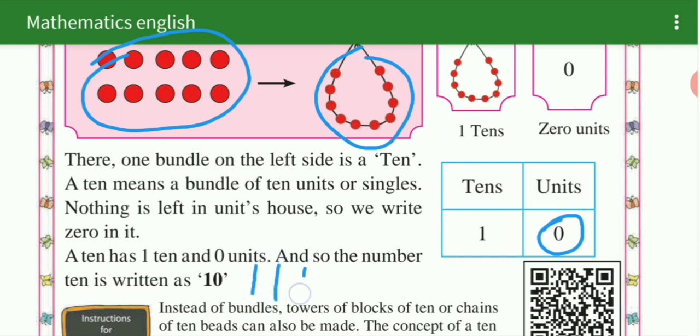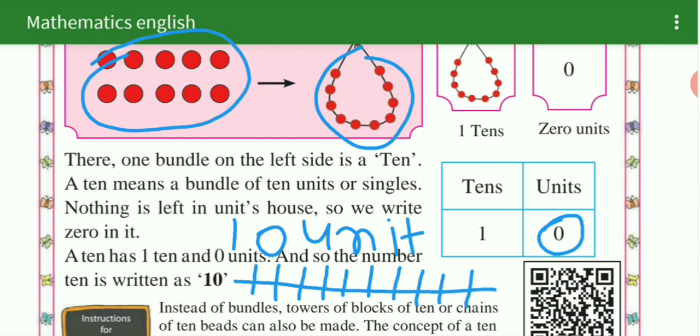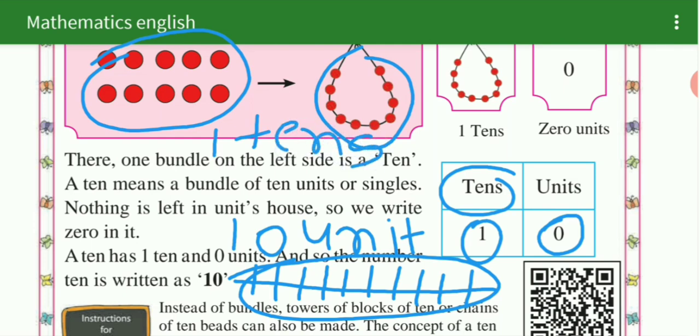When 1, 2, 3, 4, 5, 6, 7, 8, 9, 10, when 10 sticks are separate, they are 10 units. When they are tied in a bunch together, they become tens. How many tens? 1 ten. Now 10 units became 1 ten. Units how many? 0.